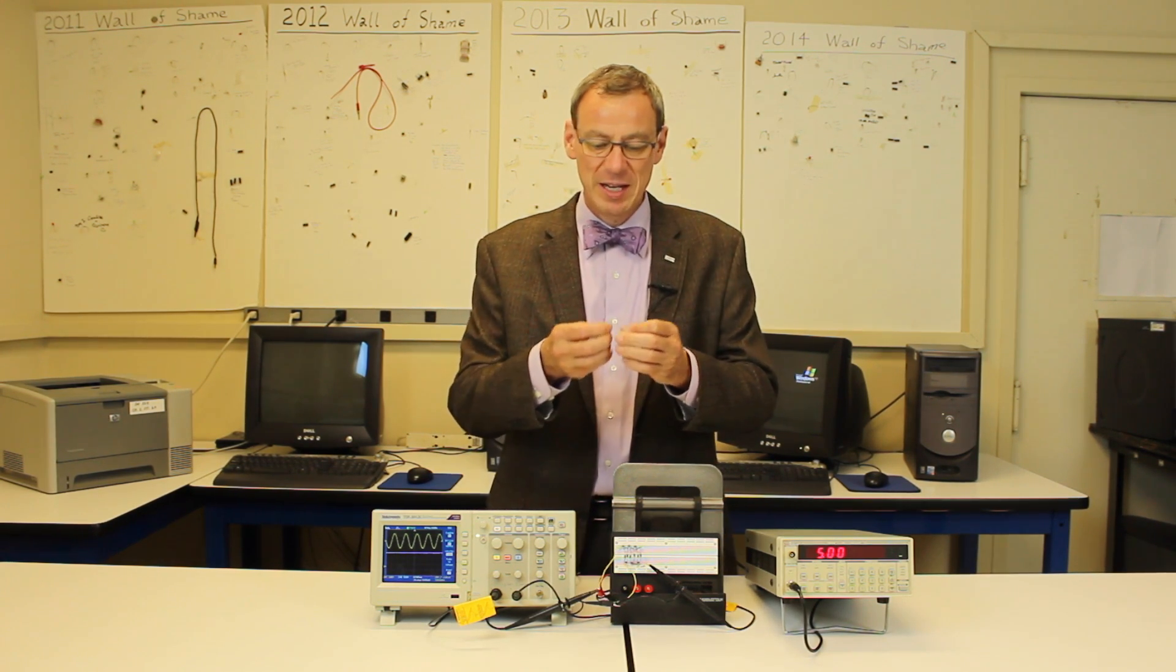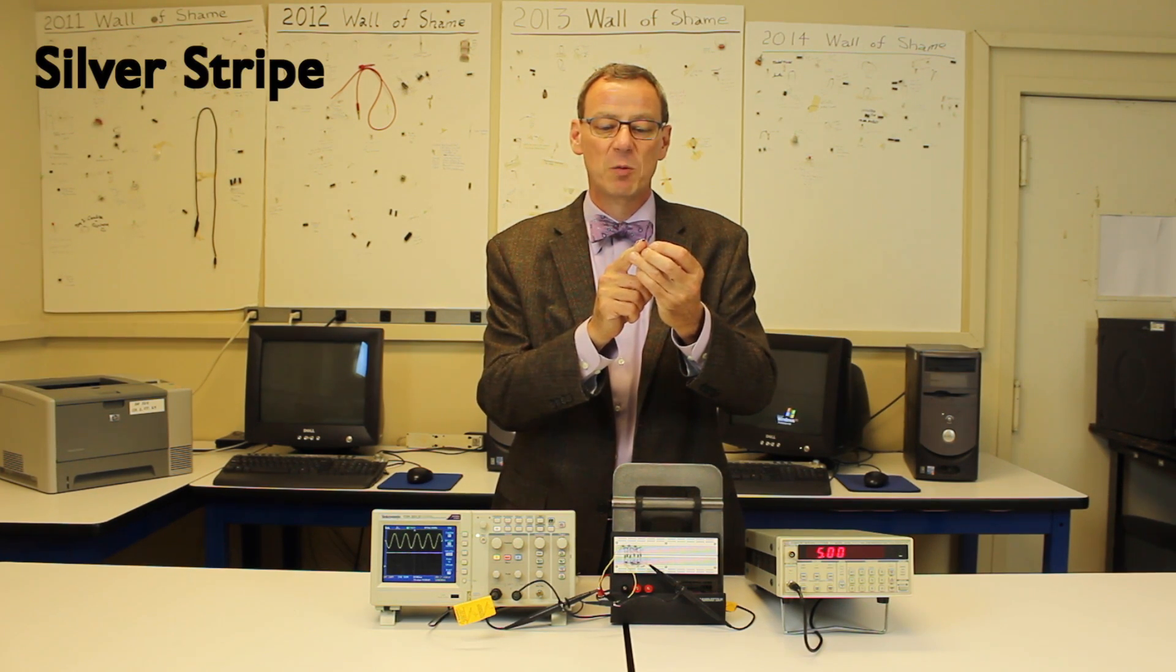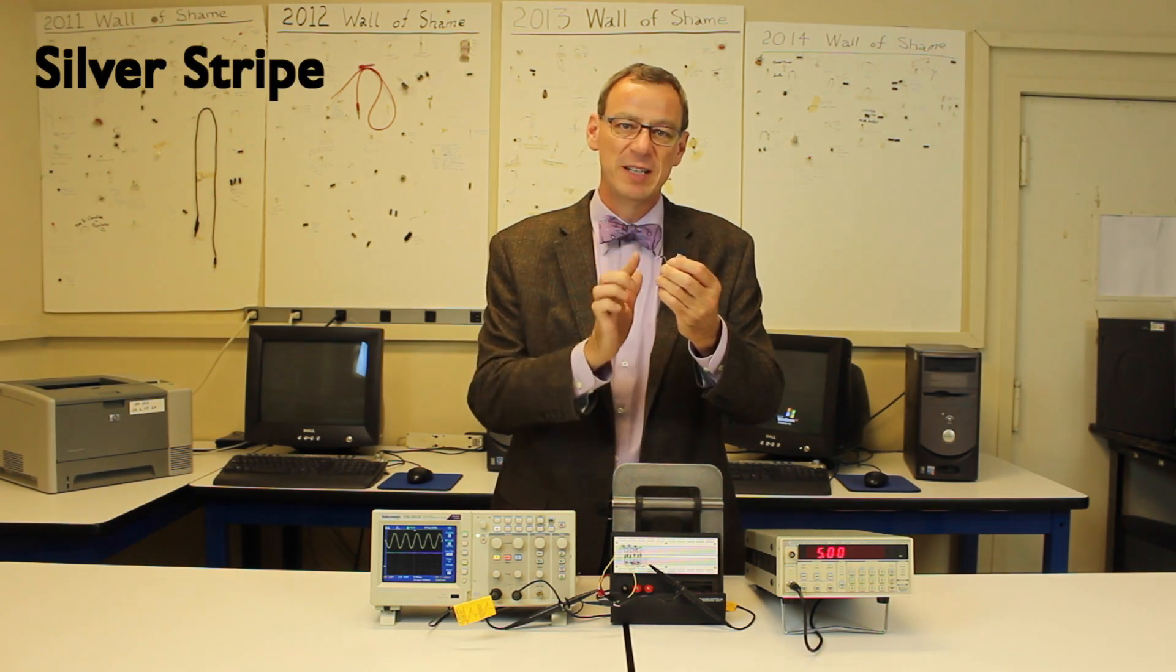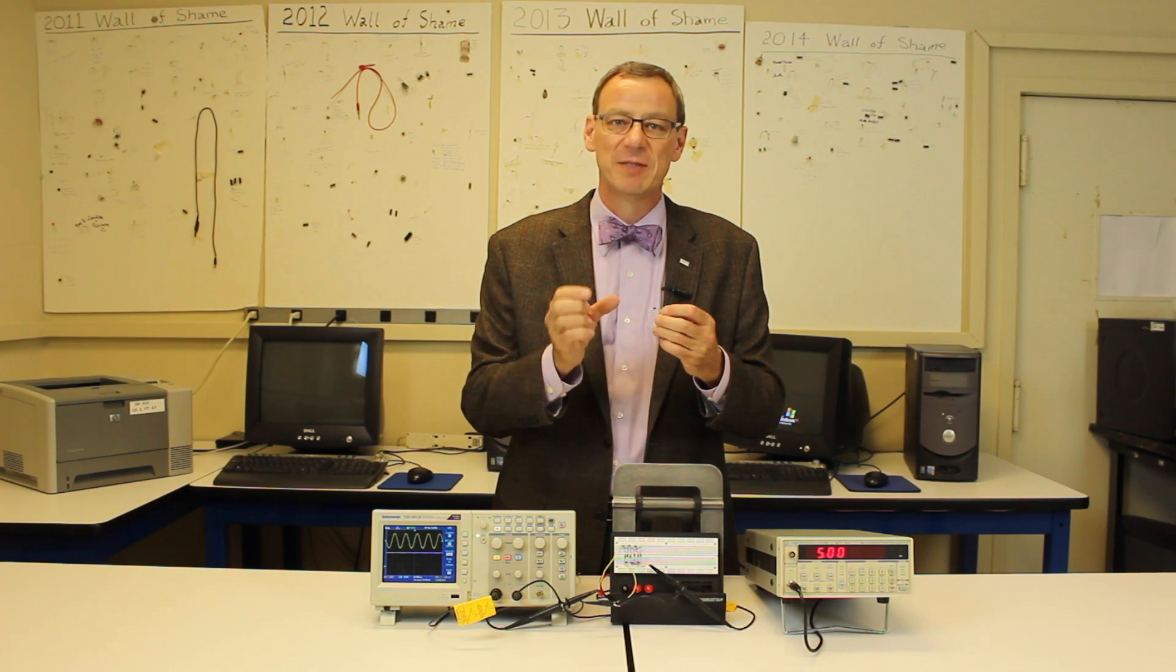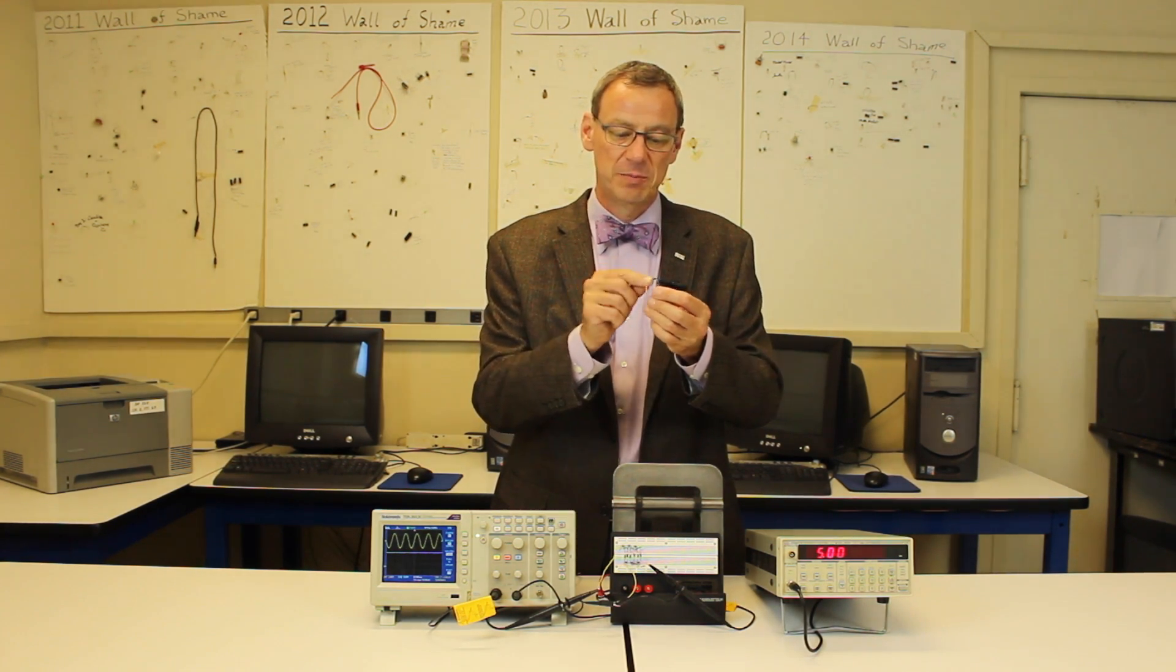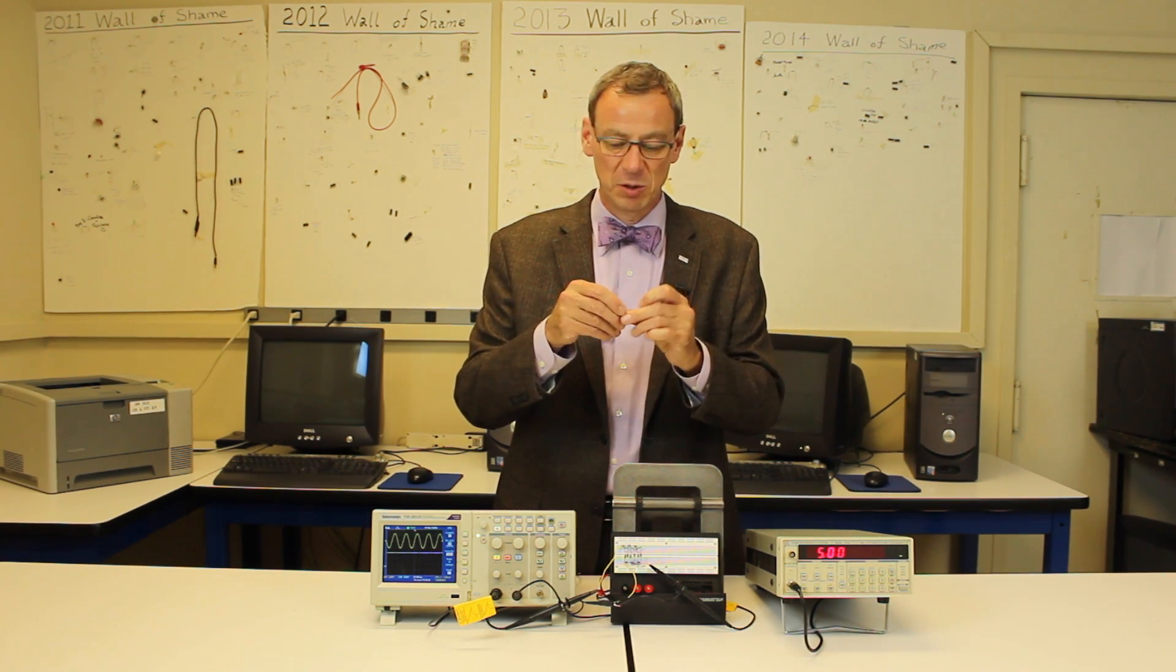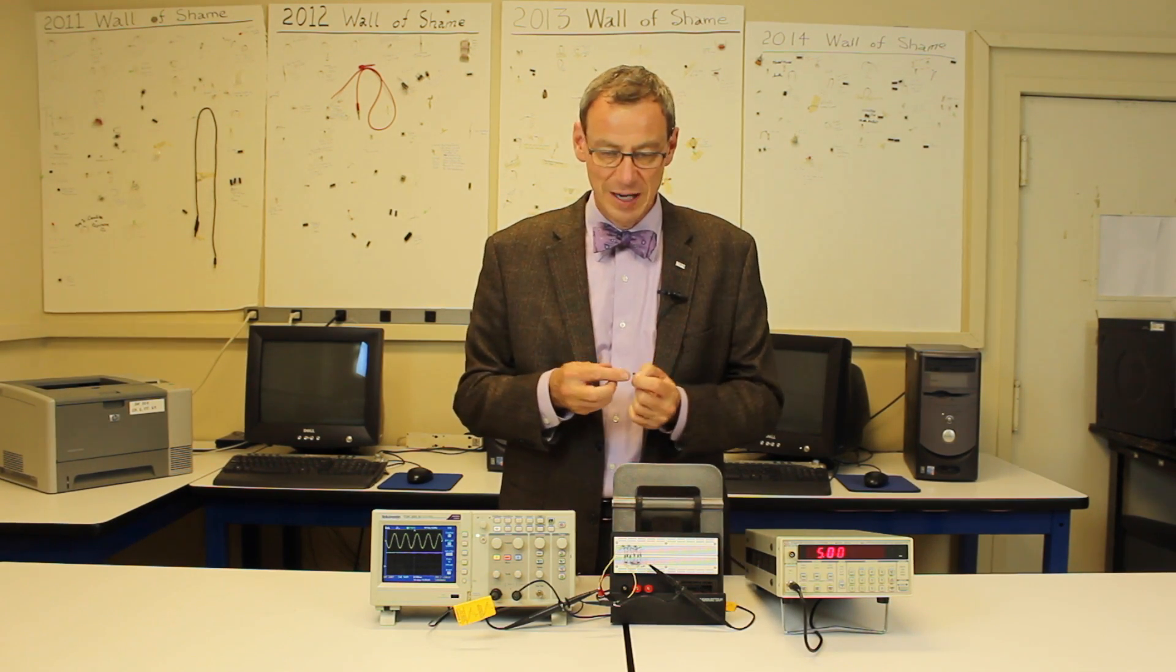A reminder about the diodes, you maybe can't see it here. Two legs. There is a silver stripe on one side. That corresponds to the line on the circuit diagram figure for a diode. So that tells you what it is there. You want to make sure that's the line. The capacitor, these little blue capacitors here are not polarized. You can put them in either way.